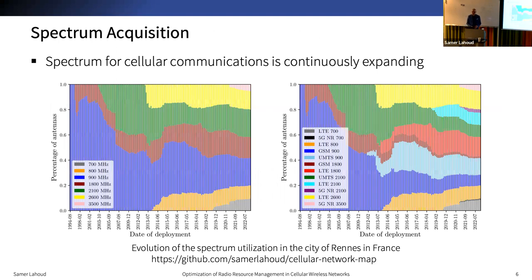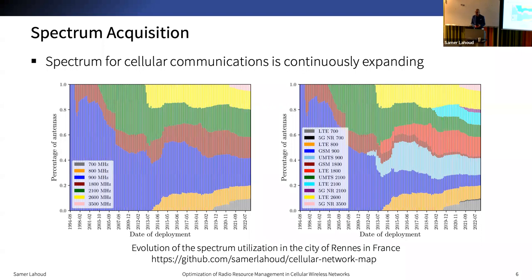In the last decade, wireless communication networks have achieved a 1,000-fold capacity increase. This increase was mainly due to radio improvement and new spectrum acquisition. In these figures, I've plotted the utilization of the wireless spectrum in the city of Rennes, France since 1994. In early days, GSM, represented in blue, was mainly deployed in the 900 MHz band. Then higher bands such as 1.8 and 2.1 GHz were explored with the arrival of UMTS and LTE.